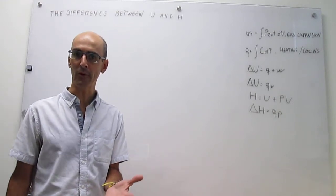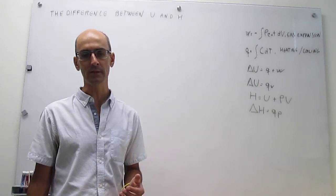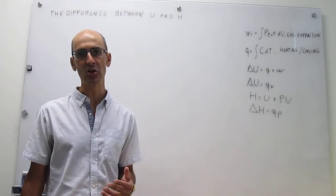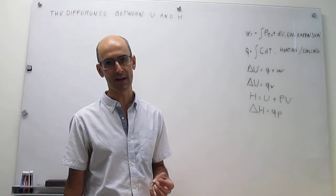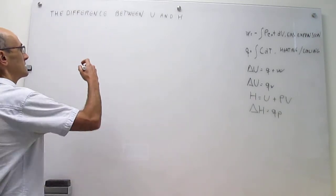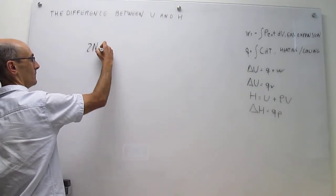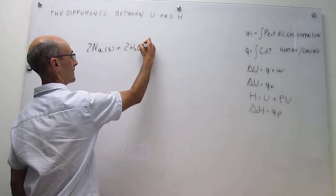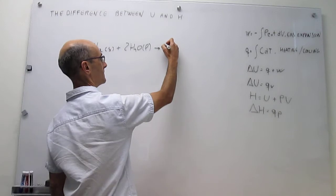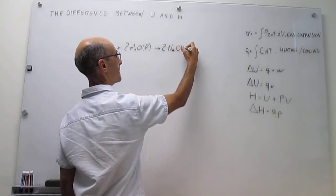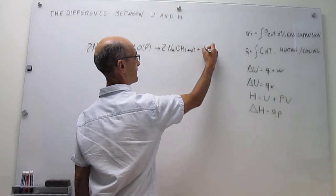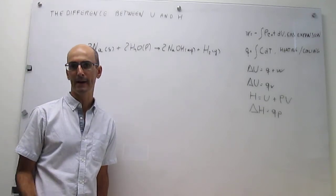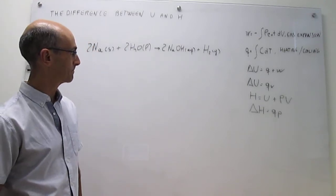We are going to take a look at a reaction and do some measurements to determine the change in enthalpy and change in internal energy. The reaction is a simple one: the reaction of sodium metal with water that generates sodium hydroxide in aqueous phase and bubbles of hydrogen. This is a typical demo that is done in general chemistry courses.